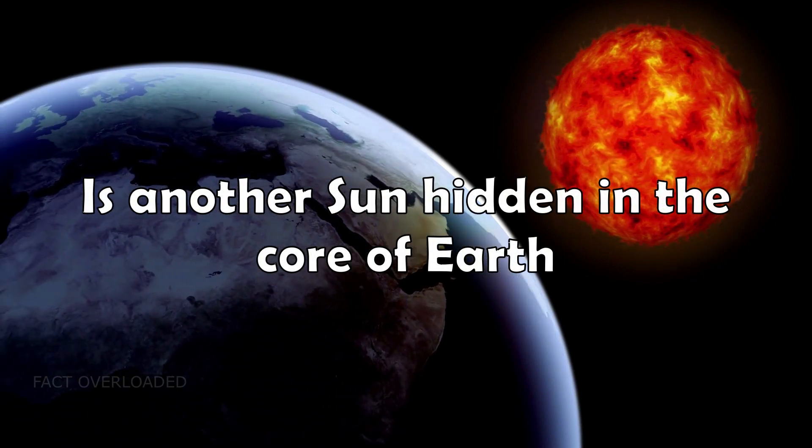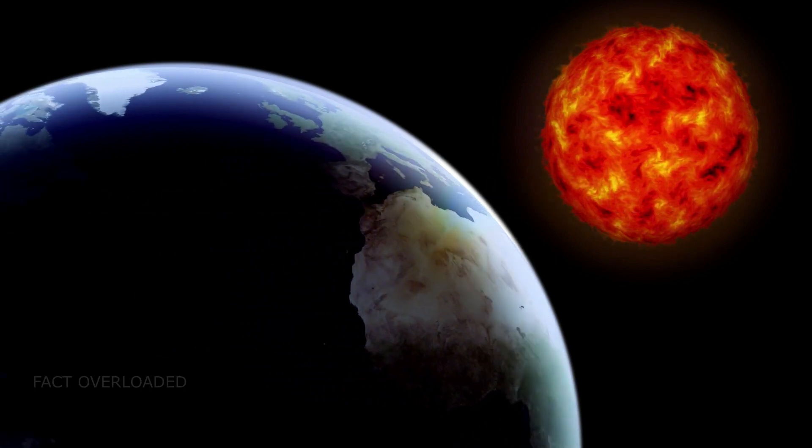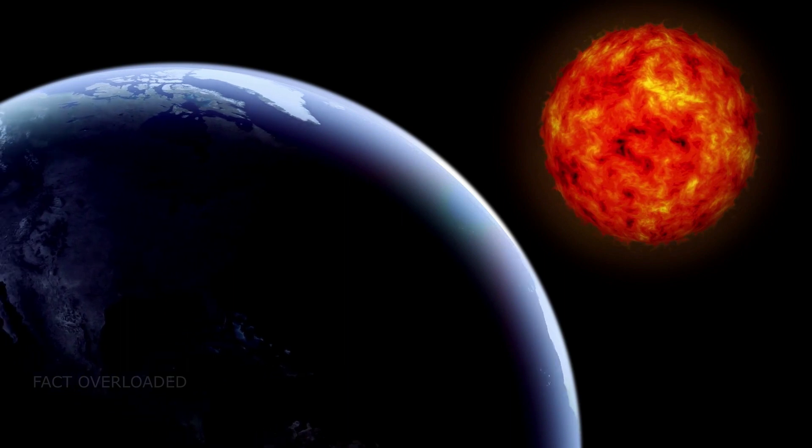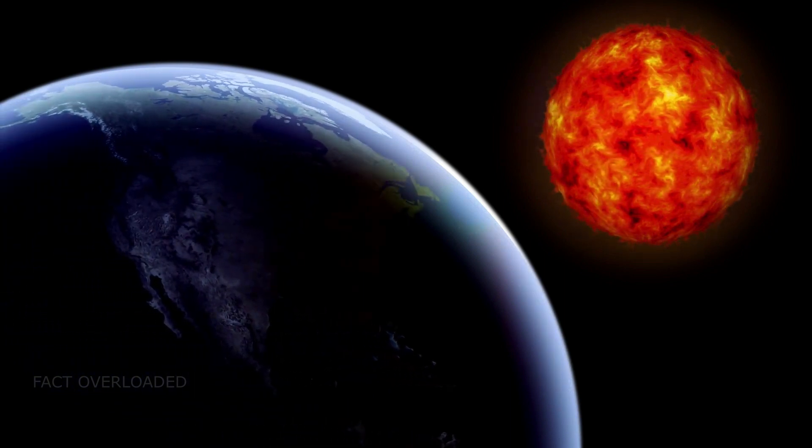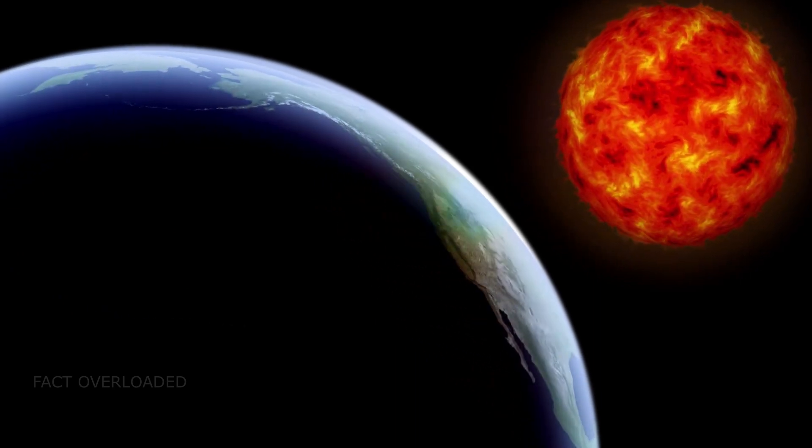Is another sun hidden in the core of Earth? All of us know very well that the sun is hot but you might be unaware of the fact that the core of the Earth has very high temperature, and it is equivalent to the temperature of the sun. The temperature is approximately 6000 degrees Celsius. Do you know that the magnetic property of the Earth is due to its core?